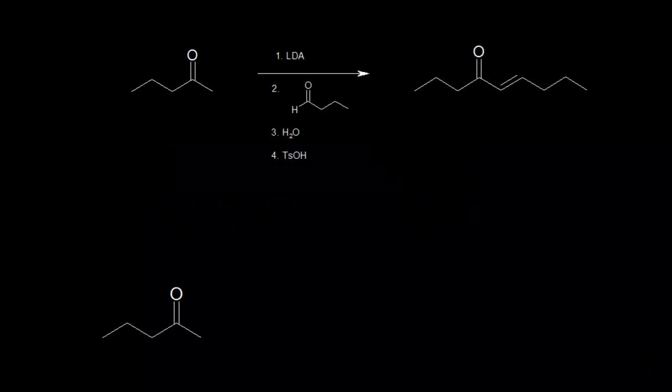Here's another way to do a mixed or crossed aldol condensation, this time using a lithium enolate. If we took this ketone and this aldehyde and just mixed them together with some base, we would get a mixture of products — we wouldn't get our desired product, this conjugated enone over here.